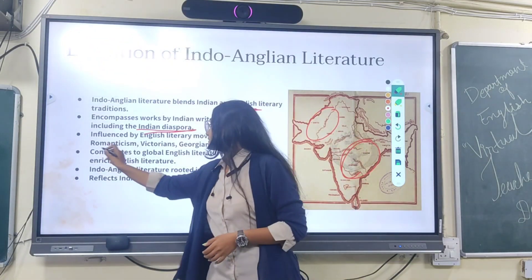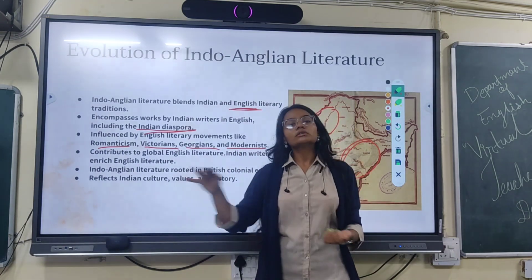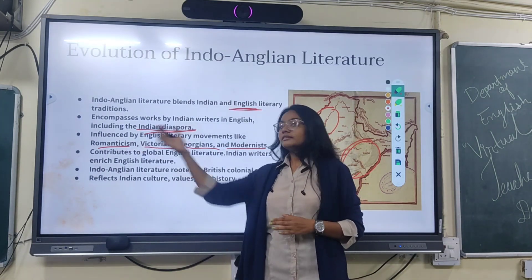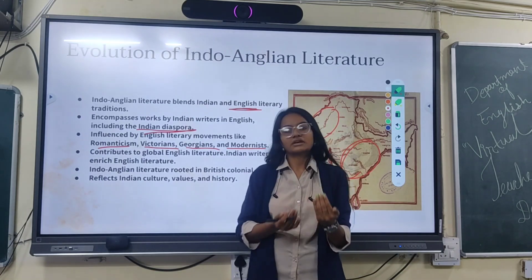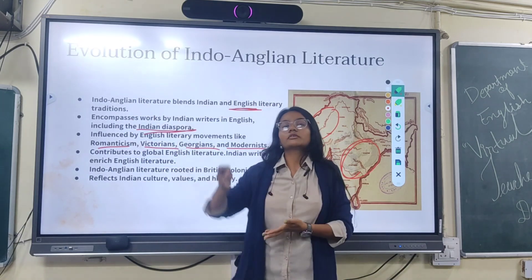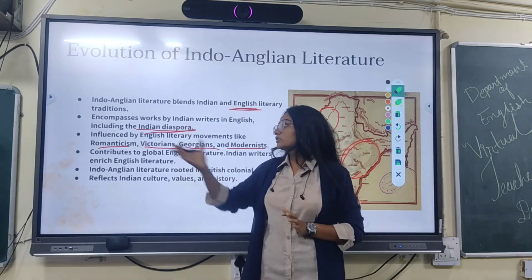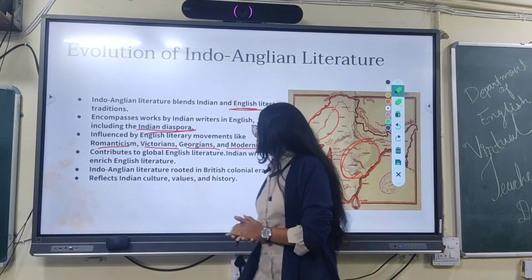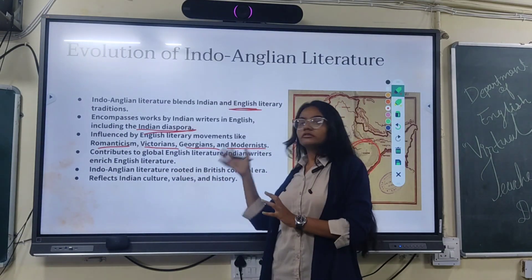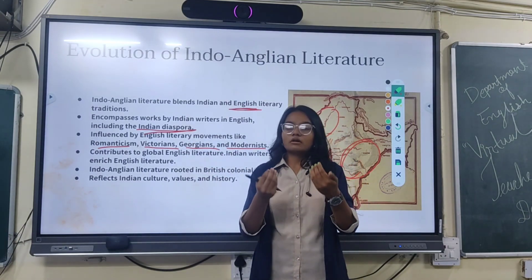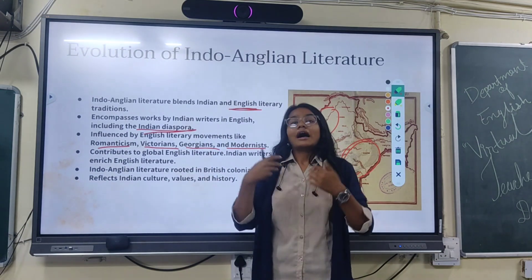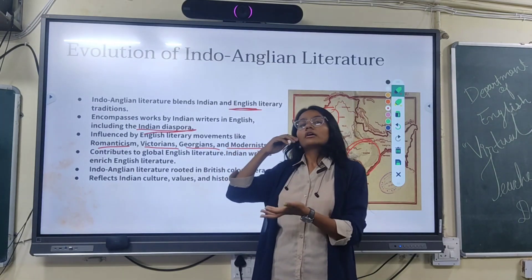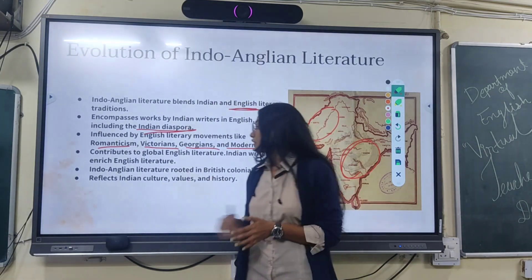Indian writing in English was influenced by English literary movements like Romanticism, Victorianism, Georgian, and Modernism. In the 18th century, when the Indian Renaissance began, these movements in Europe had their impact on it. Indian writers contributed to global English literature — before this, Indian literature was not reflected in other countries, but after the introduction of English and the Indian Renaissance, our culture was reflected to the outside world.